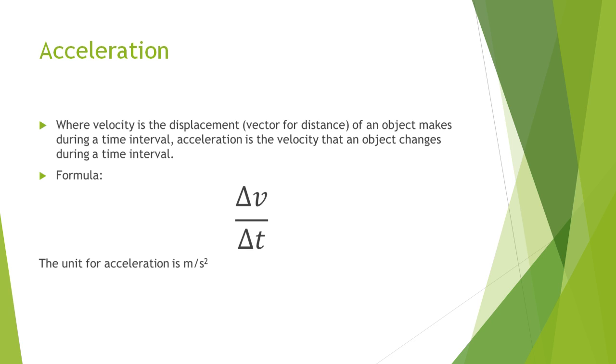Acceleration is the change of velocity that an object has during a certain time interval. So in the formula for acceleration, we would have delta v over delta t, where delta v is the change of velocity and delta t is the change in time. The general unit for acceleration is meters per second squared.